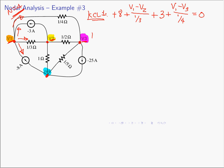KCL at node 2, currents leaving: the current going toward node 1 is (V2 minus V1) over one-third. The current source — arrows agree — gives plus (minus 3). The current heading toward node 3 is (V2 minus V3) over one-half. The current going down to the reference through the 1-ohm resistor is V2 over 1. That must equal zero.